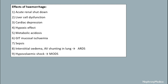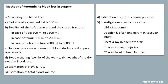Methods of determining blood loss in surgery: measuring blood loss by the size of a clenched fist, swelling of soft tissue around a fracture — in tibia 500 to 1500 mL, femur 500 to 2000 mL, pelvis fracture 2000 to 3000 mL — suction tip measurement during surgery, and swab weighing: weight of wet swab minus weight of dry swab gives amount of blood loss. Estimation of hemoglobin percentage and PCV, and total blood volume estimation can also be done.